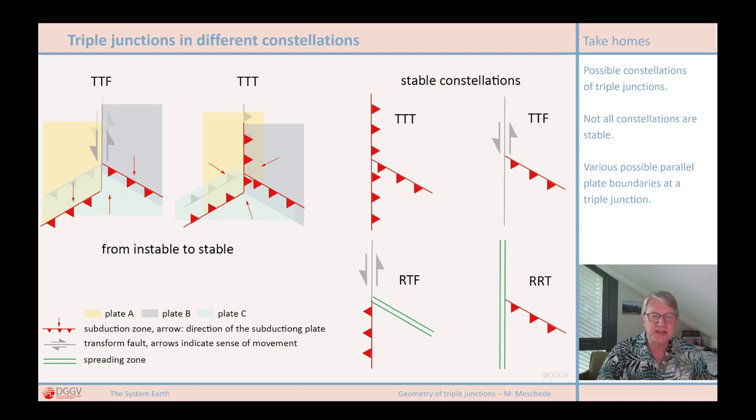Here, the subduction zone was extended and the lower left subduction zone no longer ends at a triple junction. On the right side of the figure, various constellations are shown that can be assumed as stable at least over a certain geological period of time.